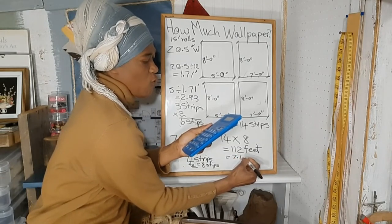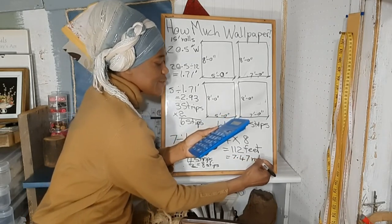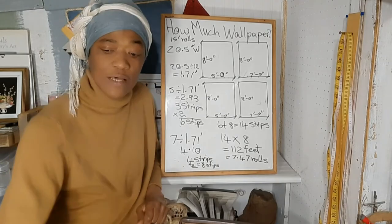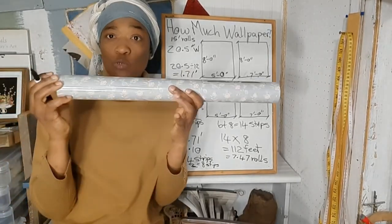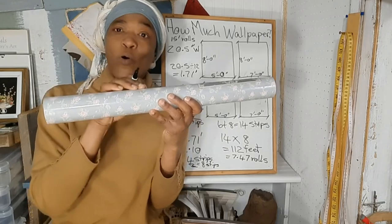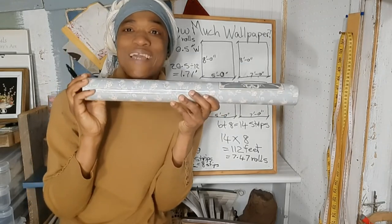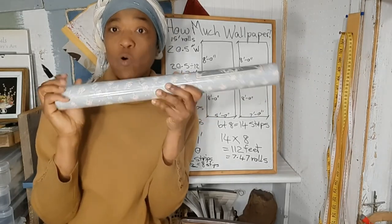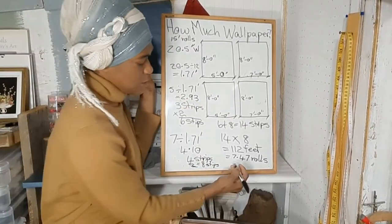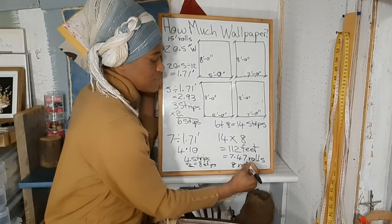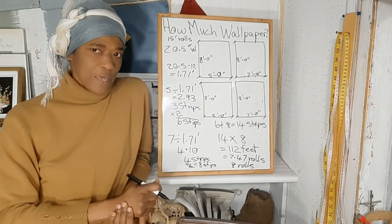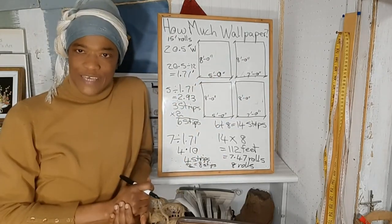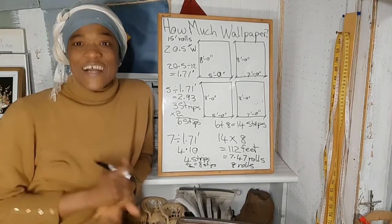So we will need 7.47 rolls of wallpaper. But we can't buy 7.47 rolls of wallpaper, so we will have to round up and buy 8 rolls of wallpaper. So it will take 8 rolls of wallpaper to cover this room.